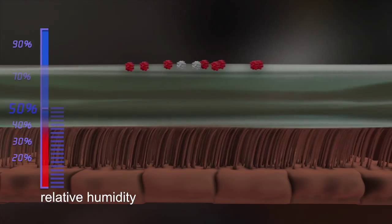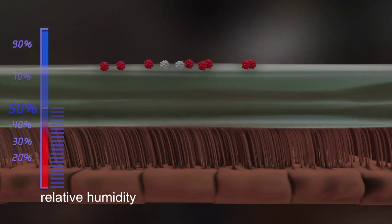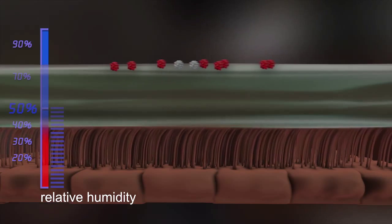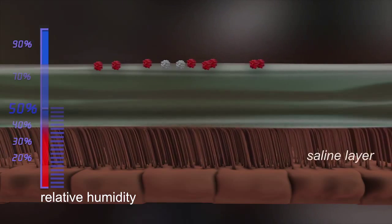The mucous membranes in the nose and the lower respiratory system feature innumerable tiny hairs, cilia, on their surfaces, which move like little whips in a watery saline layer.